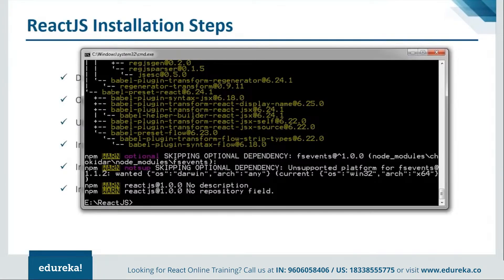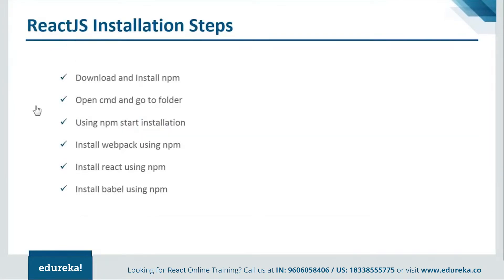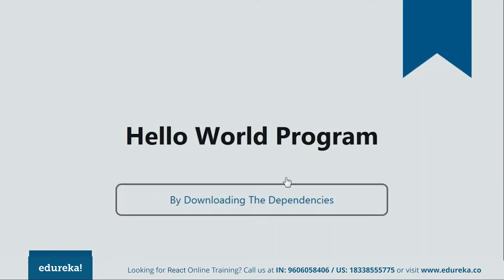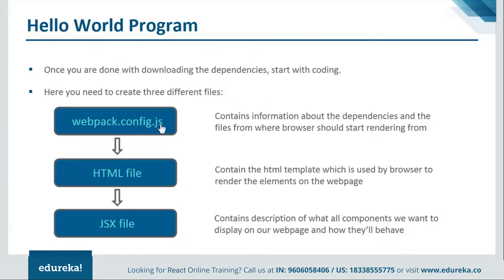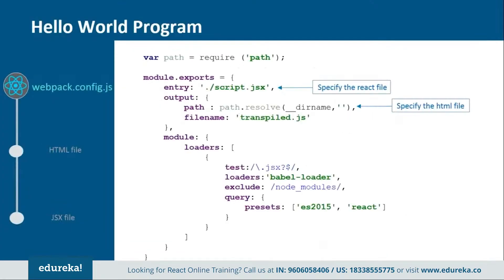To create our program we'll be creating three files. One will be webpack.config.js, one will be an HTML file, and the last one is the JSX file. The webpack.config.js is a configuration file containing information about the dependencies and the entry point for the browser. The HTML file contains the HTML template used by the browser to render elements on the web page. The JSX file contains the description of all elements we want to display on the web page.